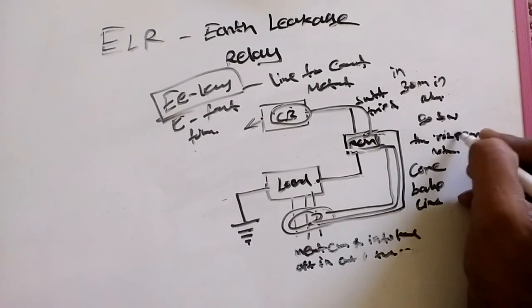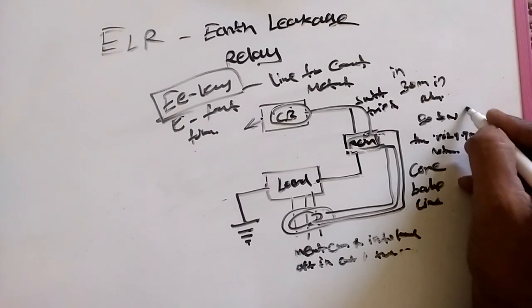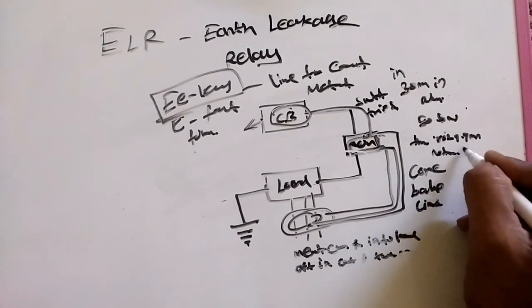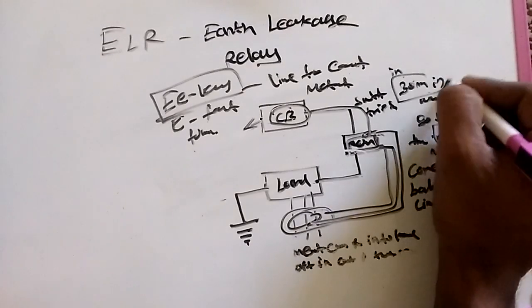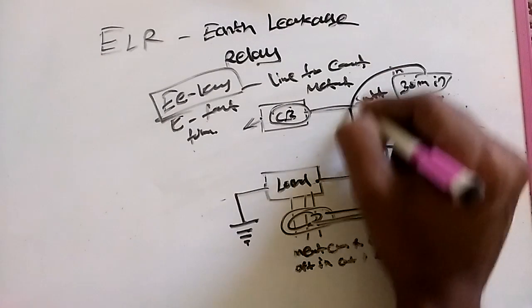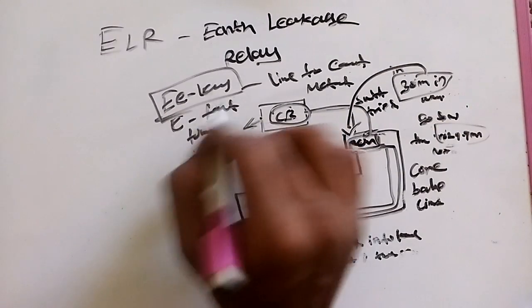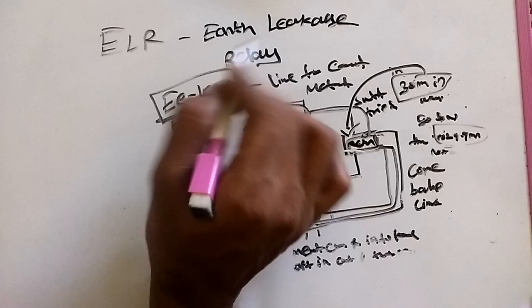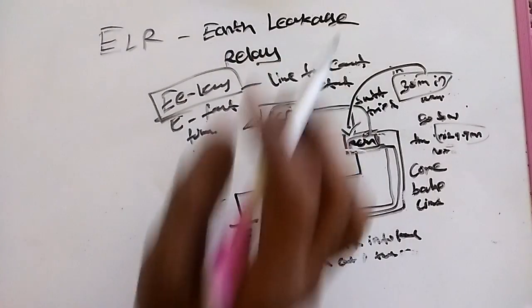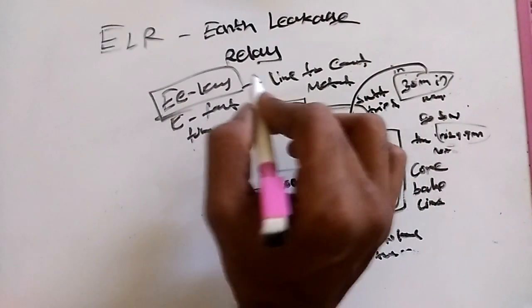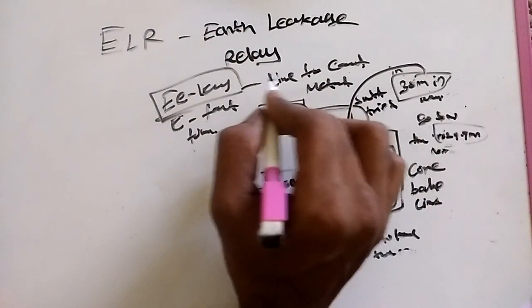After 29.9 milliampere, it affects the human body, so we always take a reference of 30 milliampere for tripping current. That's all guys, this is the ELR circuit, earth leakage relay working principle. If you have any doubts, please comment on this video. Thank you very much.